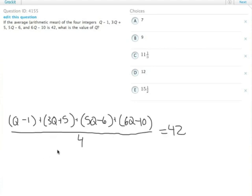We can do some simplifying though. We first multiply both sides by 4 and that ends up equaling 168. 42 times 4 is 168 and we can simplify q, 3q, 5q, and 6q into 15q and then minus 1 plus 5 minus 6 minus 10 ends up being minus 12.